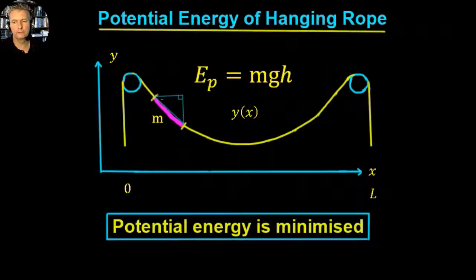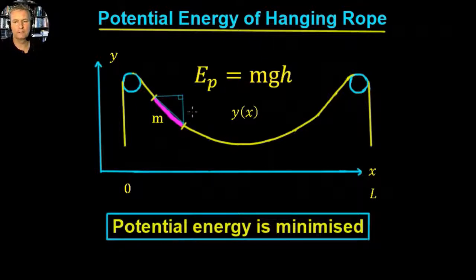If we were to imagine we took some small segment of rope there in pink, we could pretend that the rope, instead of being curved at that point, is actually straight. If we take this length here — which is the height, the y-axis — and this length here on the x-axis, then we could use Pythagoras' theorem: y squared plus x squared equals s squared, where s is that distance.